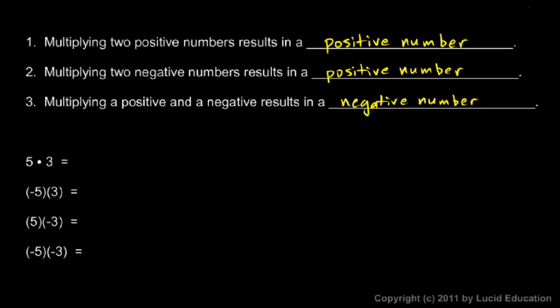With that in mind, we should be able to solve these problems. 5 times 3 is obviously 15. Negative 5 times 3 — one of them is negative, so the result will be negative — we have negative 15 for an answer. 5 times negative 3 also gives us negative 15, because one of the numbers was negative and one was positive. In this last example, negative 5 times negative 3, they're both negative. Multiplying two negative numbers gives us a positive number for an answer: positive 15.